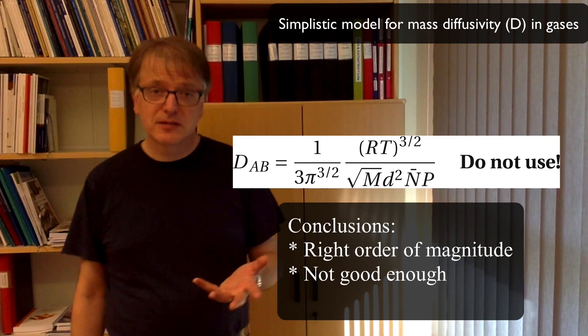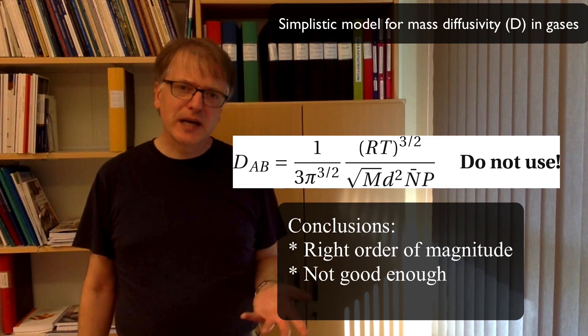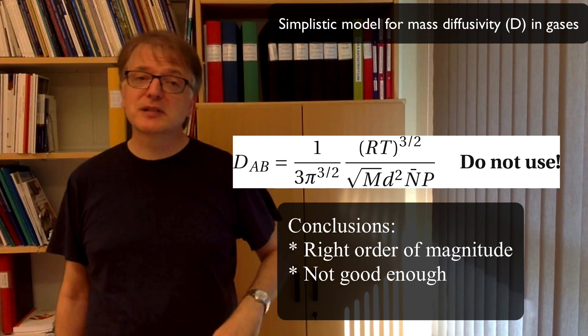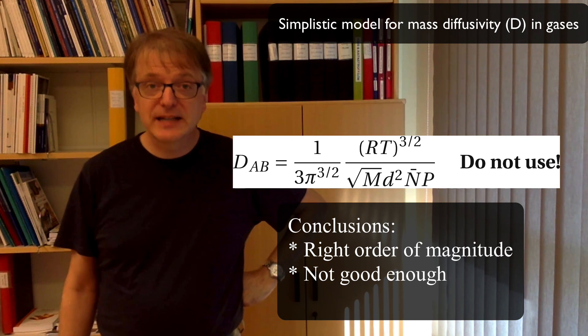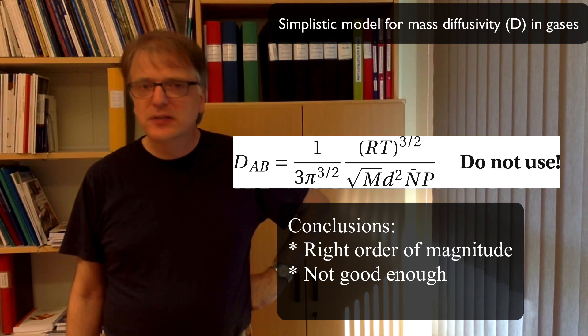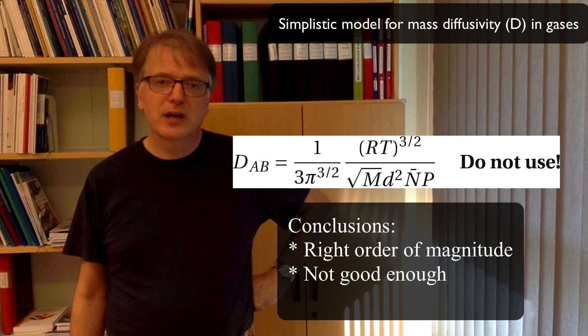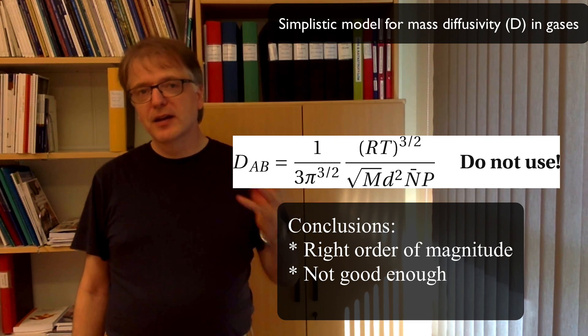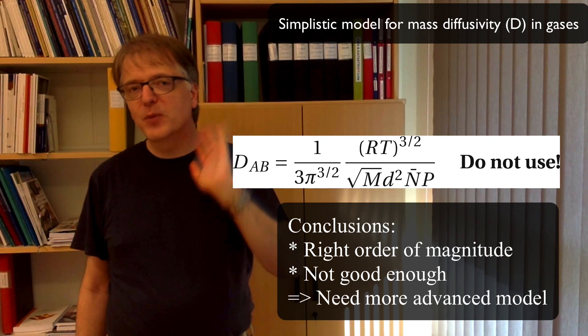So our conclusion here is that it's in the right order of magnitude. It's approximately something like 10 to the power minus 5 square meters per second, which is a good value for gases. But it's not good enough, not good enough for most purposes. So we need to use a more advanced model.